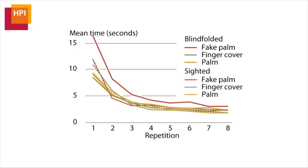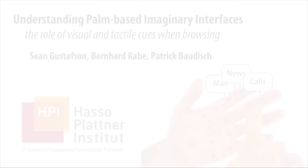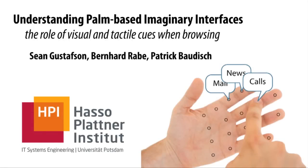This implies that it is not the tactile cues felt by the interacting finger that improve non-visual interaction, but how the finger is sensed by the palm itself. In summary, we learned that visual cues, tactile cues sensed by the palm, and tactile cues sensed by the pointing finger all contribute to the performance of palm-based imaginary interfaces, in that order. In addition, users performed well with the interface, suggesting that this interaction technique has the potential for forming the basis of future standalone ultra-mobile devices.